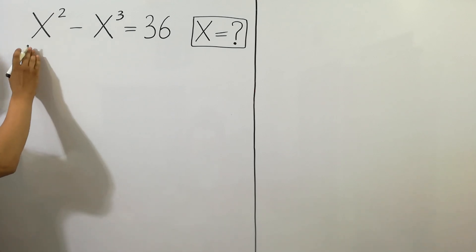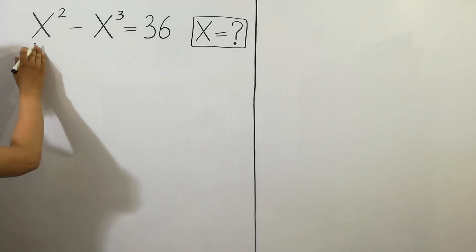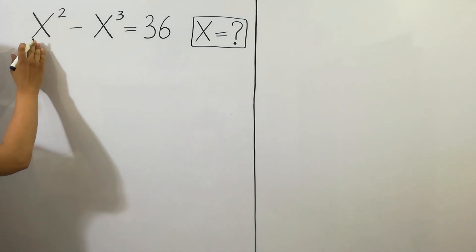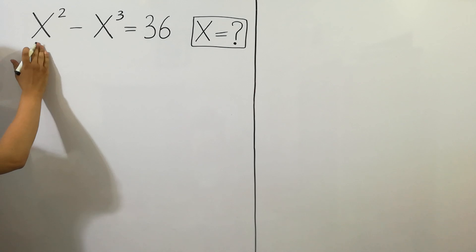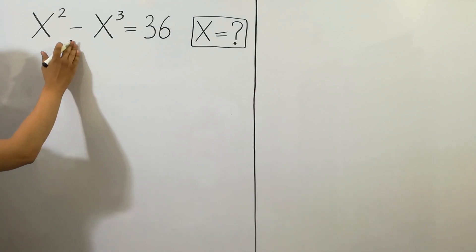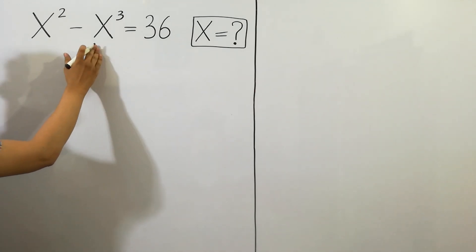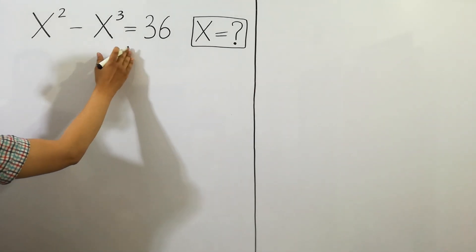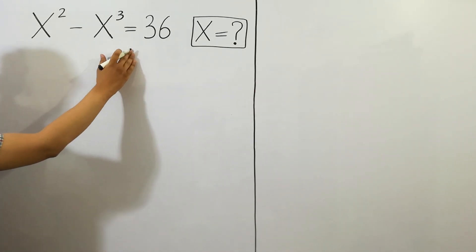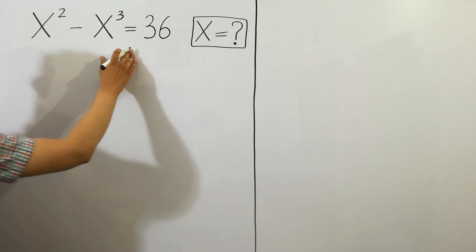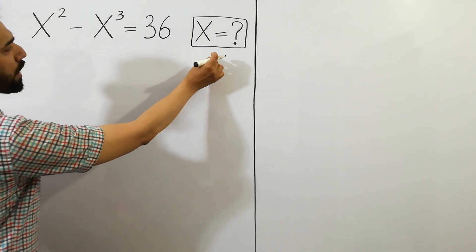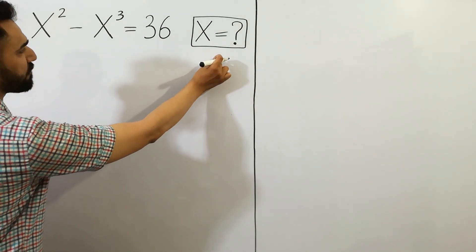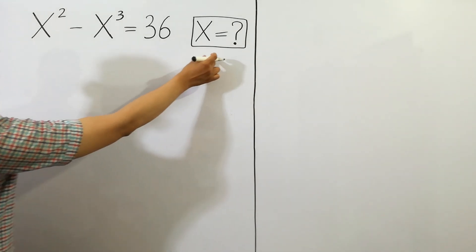Hey guys, we have a next math question: x squared minus x cubed is equal to 36. Then what would be the value of x?